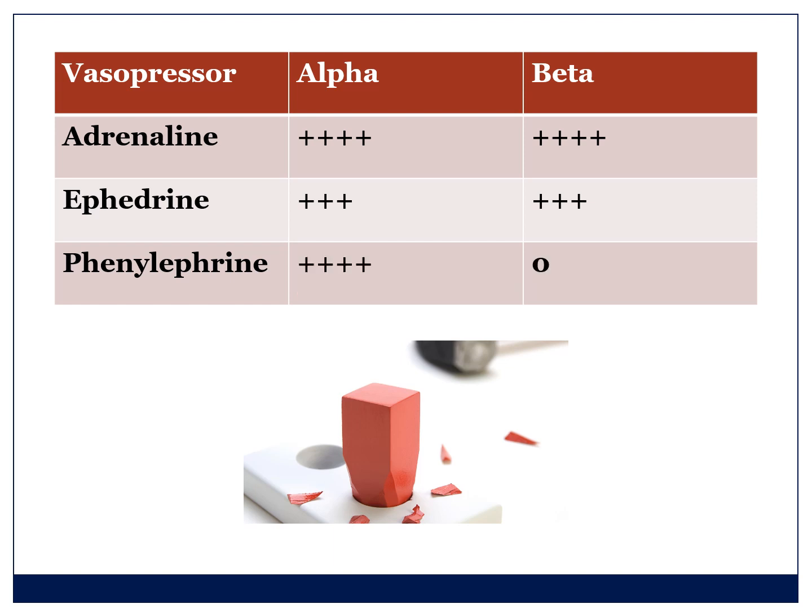Phenylephrine only gives you alpha-one stimulation. It's a very powerful vasoconstrictor, but it doesn't help inotropy and it doesn't increase the heart rate. Sometimes you even see the heart rate come down if you overshoot on the blood pressure — a reactive bradycardia. When you look at the receptors involved, you need to consider which drug is appropriate for which cause of hypotension.